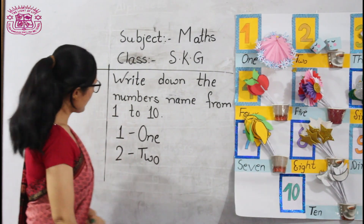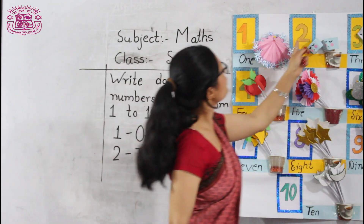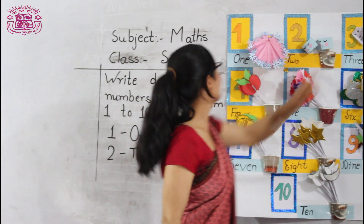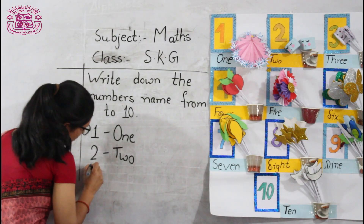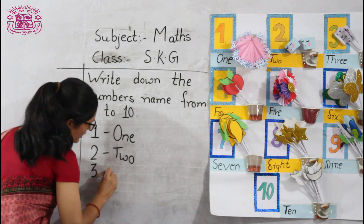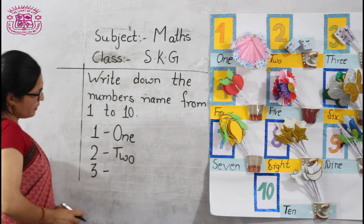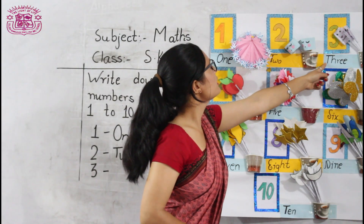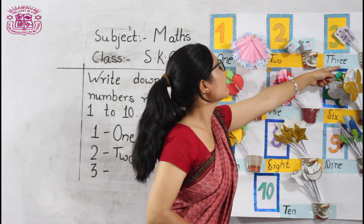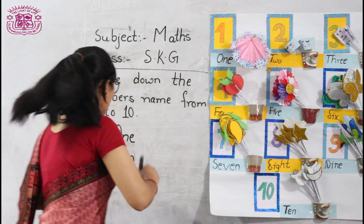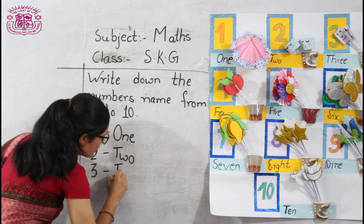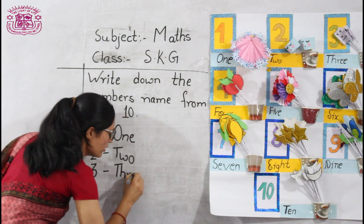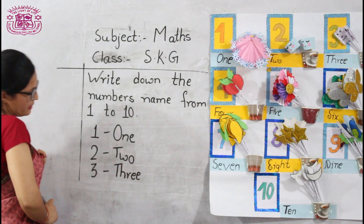Okay, what comes after 2? Look here. What comes after 2? 3. Okay. Here you write 3. What is the spelling of 3? T-H-R-E-E. 3.